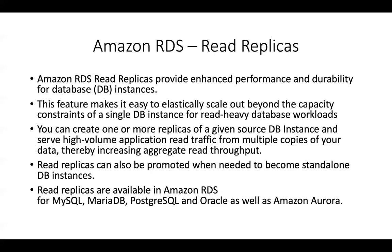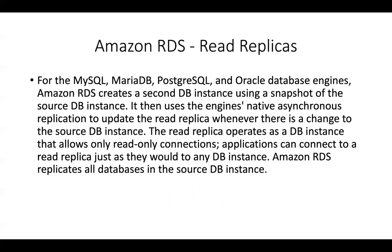Each read replica gets its own DNS endpoint, different from the primary database endpoint. When you promote a read replica to a standalone database, replication is cut, and the promoted database can serve both read and write traffic. Read replicas are available for MySQL, MariaDB, PostgreSQL, Oracle, and Amazon Aurora — and possibly SQL Server; check the documentation for that.